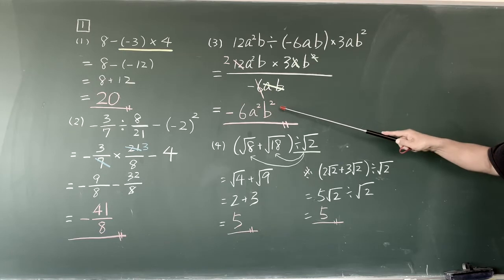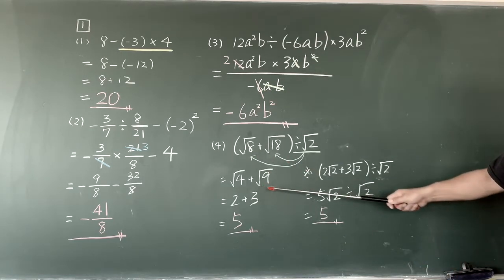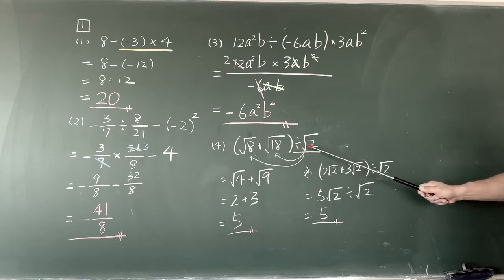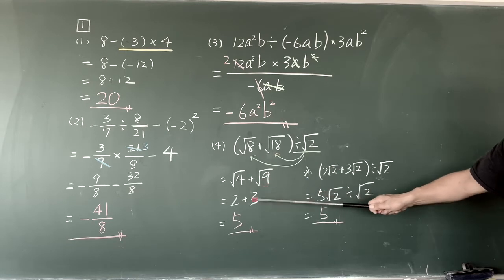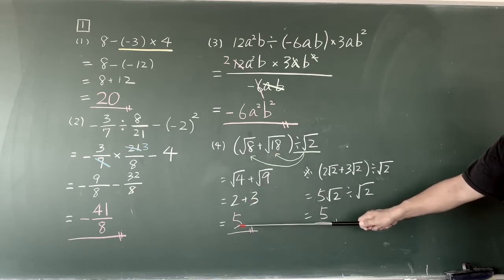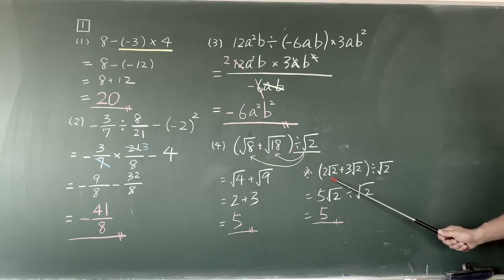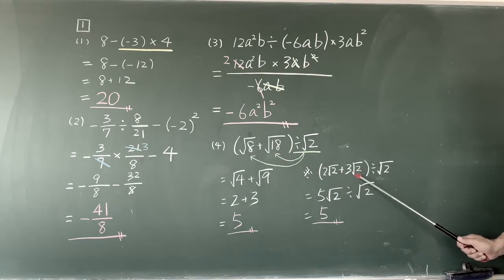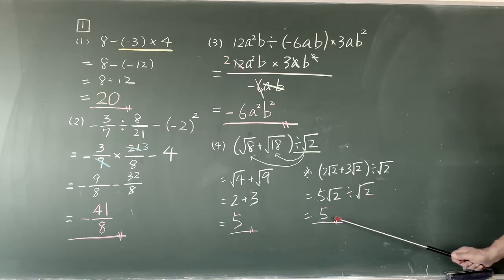答え、-6a²B²。これは2通り式が書いてあります。1つは、割るルート2で、ルート4たすルート9で、2たす3で5。もう1つは、ルート8が2ルート2、ルート18が3ルート2で計算して、5ルート2割るルート2で5。どちらで解いてもよいですね。